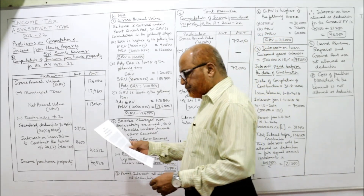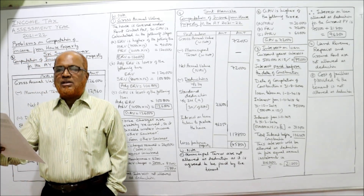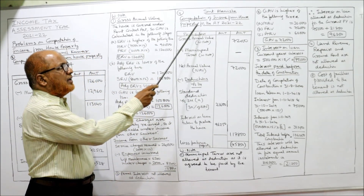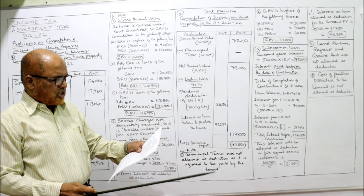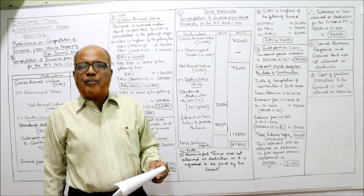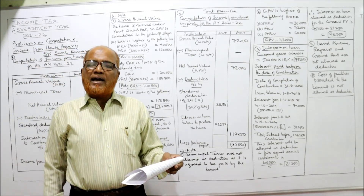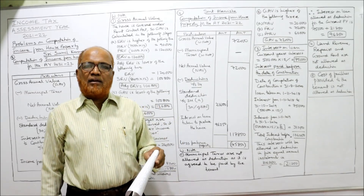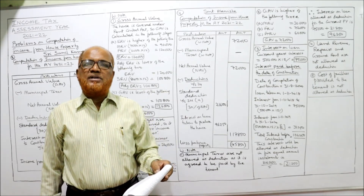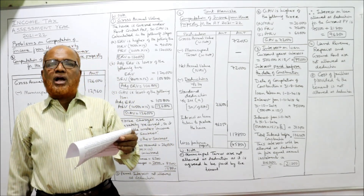Now see problem number 4: from the following particulars, compute the income from house property for the current assessment year for Srimathi Manisha. Municipal value means MRV (municipal rental value). Rent received is ₹55,000 due ₹5,000 — actually, rent received will not be taken as rental value; the ₹5,000 due will be added: ₹55,000 + ₹5,000 = ₹60,000 is the annual rental value (ARV).